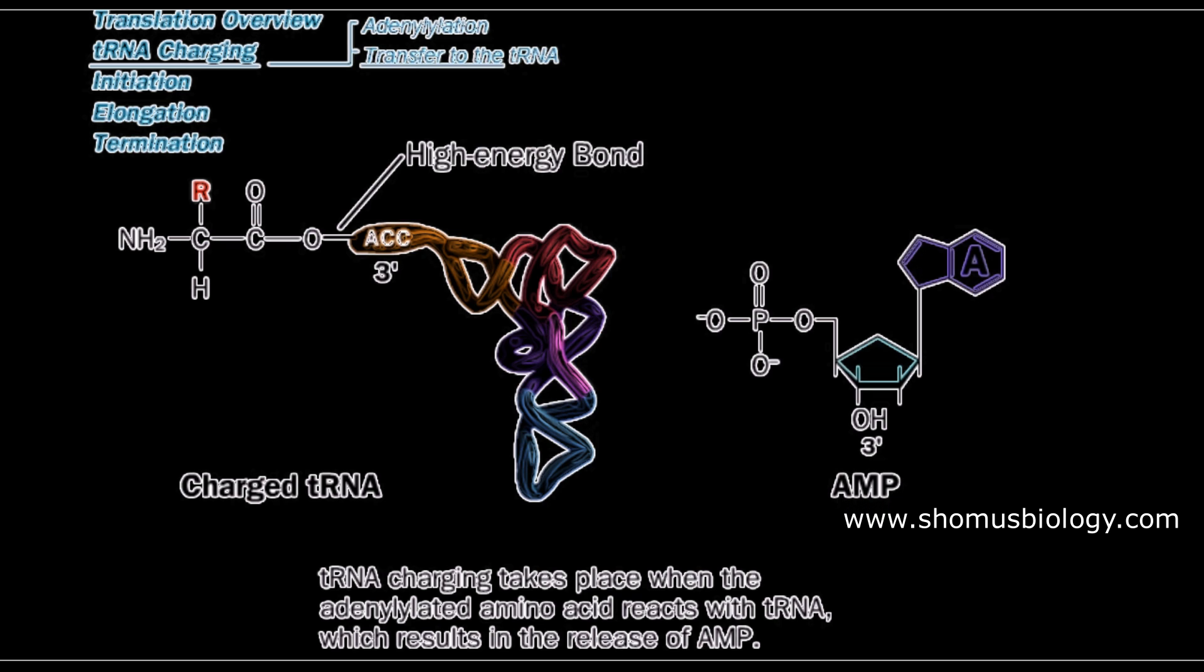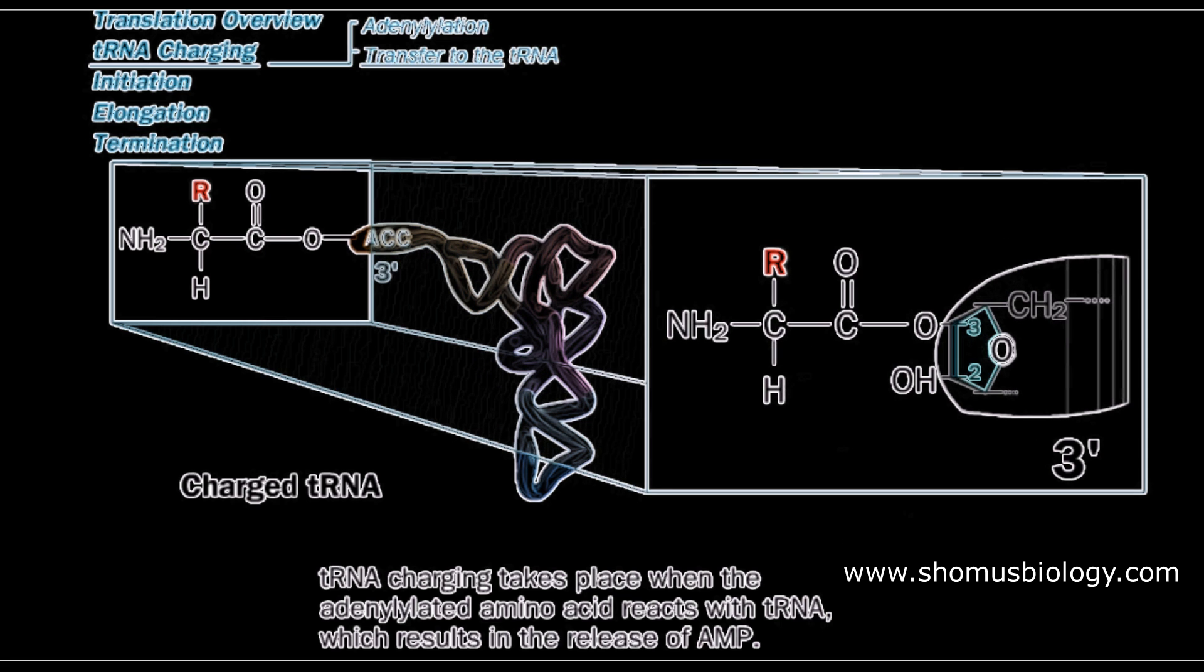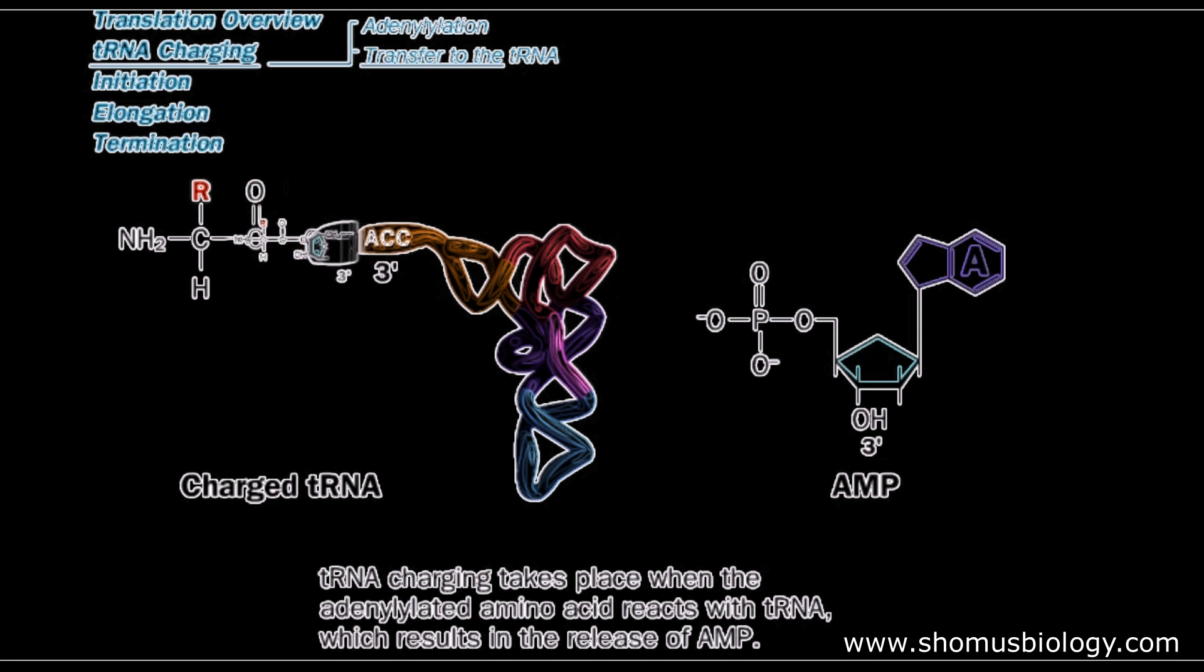This bond between ACC and amino acid is a high energy COO bond, and AMP gets cleaved out and released as a result of this process. You can see how the ribosugar is connected to this structure COO—that is the OH of the 3' hydroxyl.